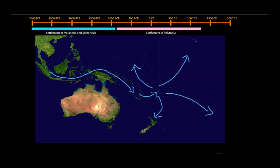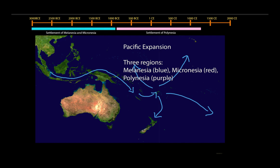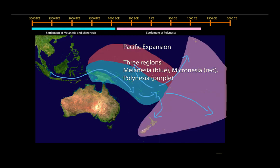The next migration we want to study is that of people moving throughout the Pacific Islands. You can see the path this migration probably took. When we talk about expansion in the Pacific, it's somewhat similar to the Bantu expansion — again, we don't have written records from the people who moved. So we're relying on linguistic and archaeological evidence. This evidence helps us divide the Pacific into three distinct regions: Melanesia, Micronesia, and Polynesia.